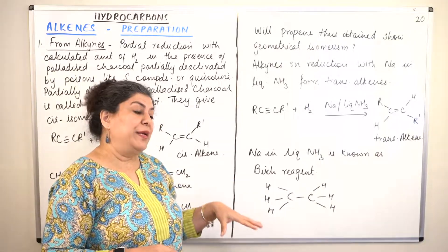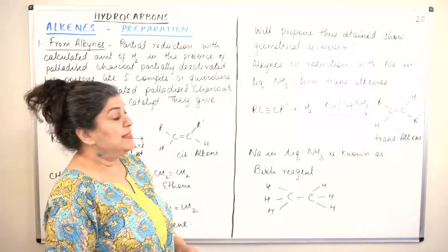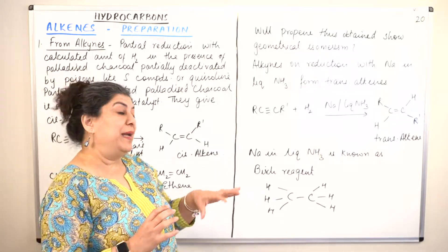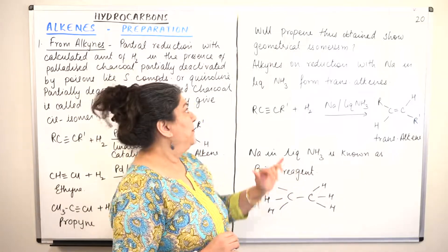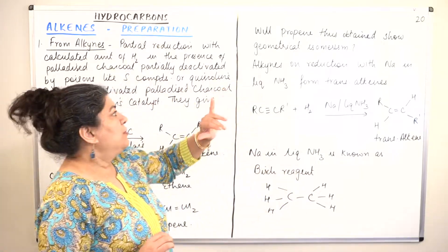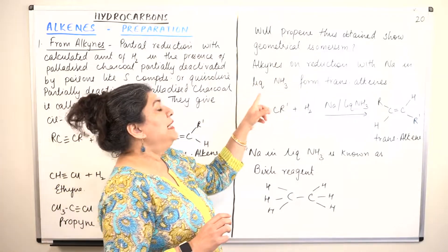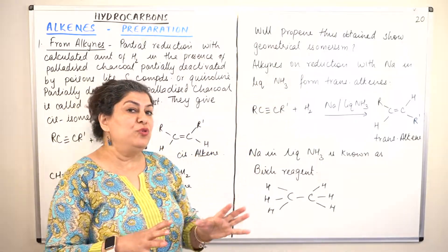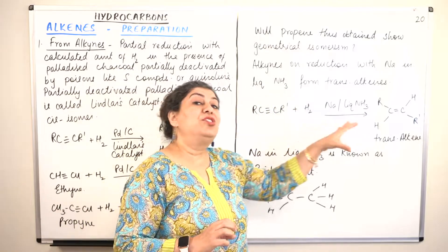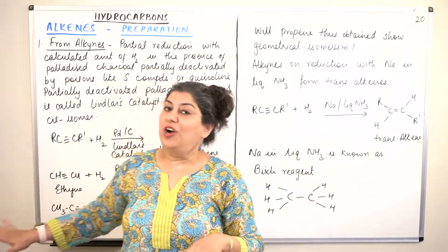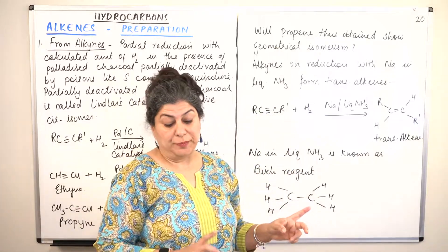This is the method to get the cis isomer. If we want the trans isomer, we use another catalyst known as the Birch reagent. Alkynes can also be reduced with sodium in liquid ammonia. If you use sodium in liquid ammonia, you get the trans alkene — you do not get the cis isomer, you always get the trans isomer.